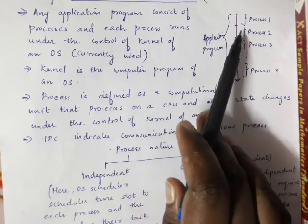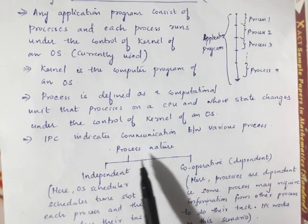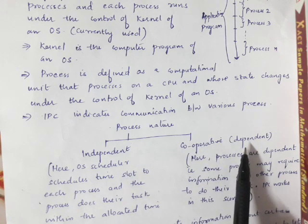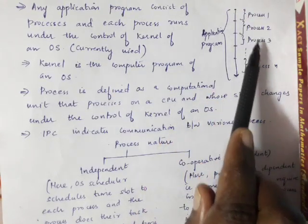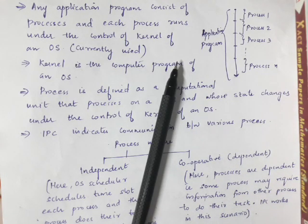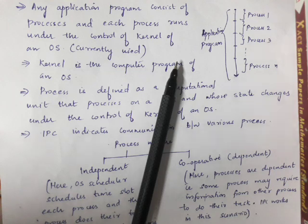Regarding inter-process communication, processes can be of two types: independent processes and cooperative processes. Independent processes do not share data with other processes. In a number of applications, processes run independently, each allocated time slots by the operating system, and they do not share data with each other. Each process is given a particular time slot to complete its work.